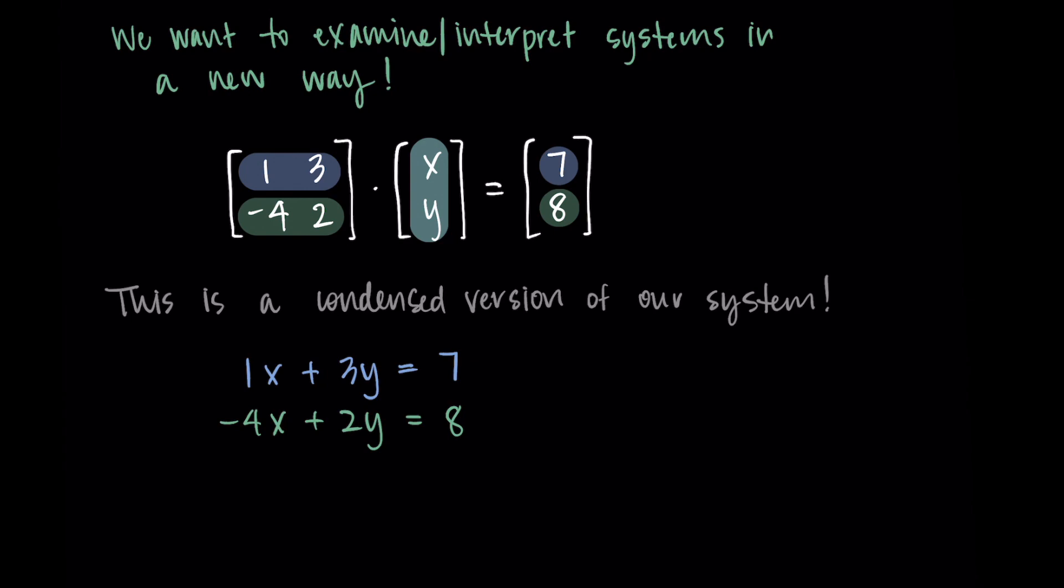So we don't really typically spend too much time talking about the dot product in this setting, but it's just one way where you can kind of relate this back to something you've seen before. We formalize this later when we talk about matrix multiplication, but we start here with just this equation Ax equals b where we're taking a matrix and multiplying it by a vector.